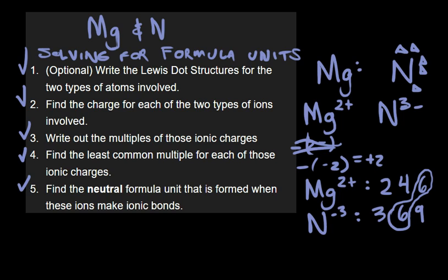That's our second last step. Our last step is going to be to find the neutral formula unit that is formed when these ions make ionic bonds. Let's think about this for a moment. Ask yourself, you're going to end up with a positive six charge from all the magnesium ions, and that will cancel out the negative six charge that you're going to get from the nitrogen ions.